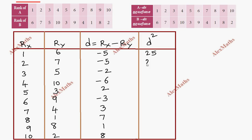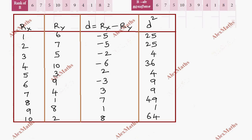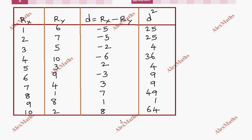The d squared values are: 25, 25, 4, 36, 4, 9, 9, 49, 1, 64. Now we compute the summation sigma d squared.